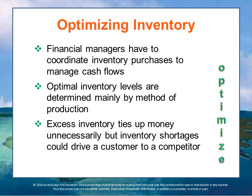The other major current asset is inventory. Financial managers have to coordinate inventory purchases to manage their cash flows. The objective is to minimize investment in inventory without experiencing materials shortfalls or lost sales. Optimal inventory levels are determined in large part by the method of production. If the firm uses just-in-time to meet sales demand, the inventory will be low.